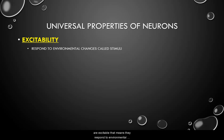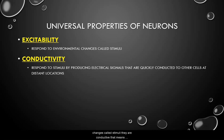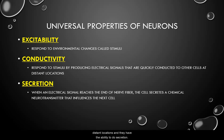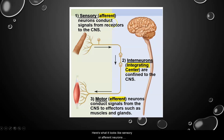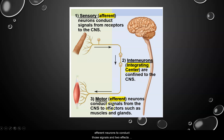Some universal properties of neurons: they are excitable, meaning they respond to environmental changes called stimuli. They are conductive, meaning they respond to stimuli by producing electrical signals that are quickly conducted to other cells at distant locations. And they have the ability to do secretion — when an electrical signal reaches the end of a nerve fiber, the cell secretes a chemical called a neurotransmitter that influences the next cell and keeps that signal going. So sensory or afferent neurons conduct signals to the central nervous system, where interneurons process that signal and send it to motor or efferent neurons, which affect the effectors like muscles or glands.